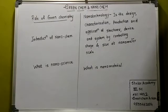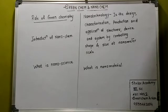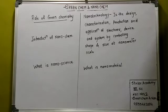Green chemistry aims to design and produce cost-effective chemical products and processes that attain the highest level of pollution prevention by reducing pollution at its source. The chemicals that are less hazardous to human health and the environment are less toxic to organisms.